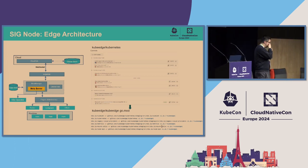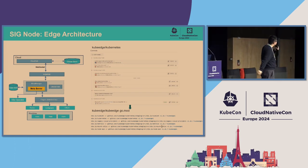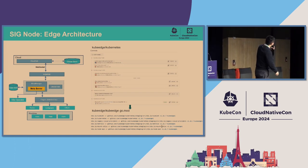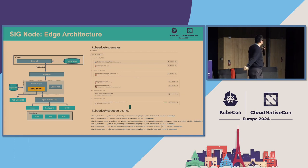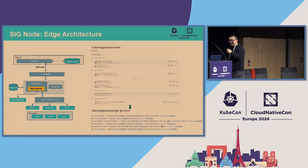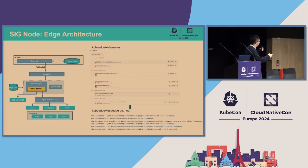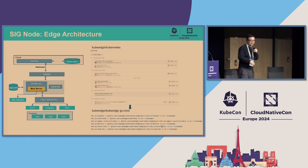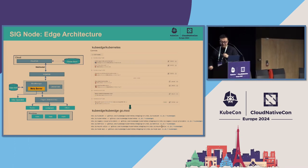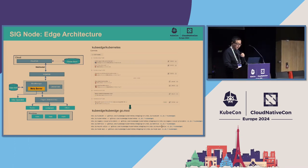On the right side, we perform lightweight trimming based on the Kubelet. We forked the Kubernetes Kubelet and did lightweight customization, replacing the original Kubernetes Kubelet with our own version.